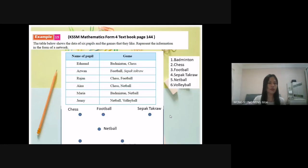Okay, we start from Edmang: badminton and chess. So I draw the line from badminton to chess and I label the edge Edmang. Azwan likes to play football and sepak takro. So I draw a line from football to sepak takro and I label the edge Azwan.